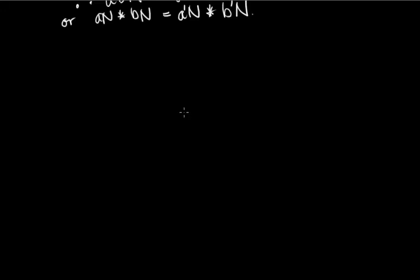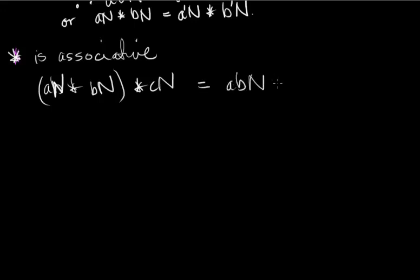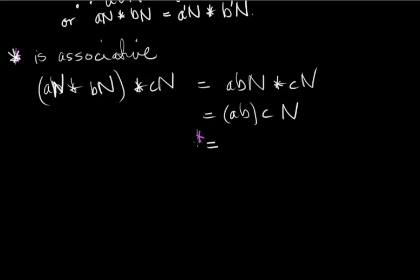Now we have to prove the group axioms. Star, our operation, is associative. If you take AN star BN and then star CN, we get ABN star CN, which is ABCN. And since G is a group, this is the same as A times BC times N, using associativity in G.